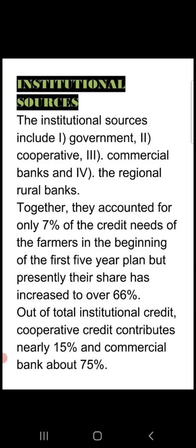The institutional sources include the government, cooperatives, commercial banks, and regional rural banks. During the first Five-Year Plan only 7% of people were taking credit from institutional sources, but now more than 66% of people are taking credit from institutional sources. Out of the total institutional credit, cooperative credit contributes 15% and commercial banks contribute about 75%.